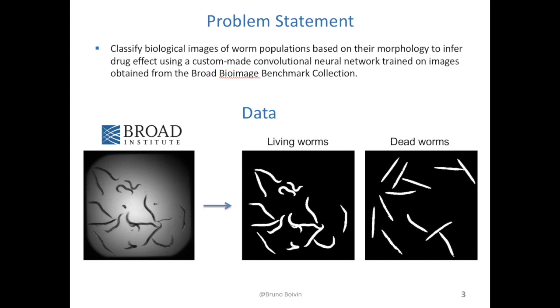Living worms tend to bend their body whereas dead worms tend to be flat and elongated, and this health-dependent morphology is what would allow us to determine the effect of a drug on a particular population of worms.